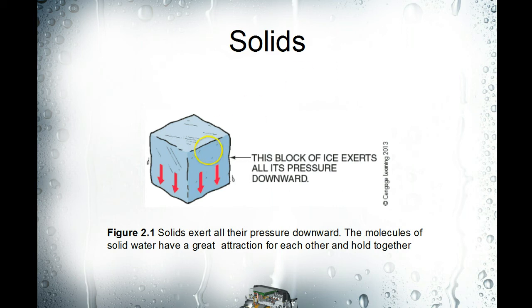We start out with a block of ice. Remember, in module one, heat is molecules in motion. When we have a block of ice, the molecules are still moving but they're not moving very quickly, so they tend to adhere to each other and not bounce off of one another. That gives ice its solid form, and solids exert pressure in a downward direction.